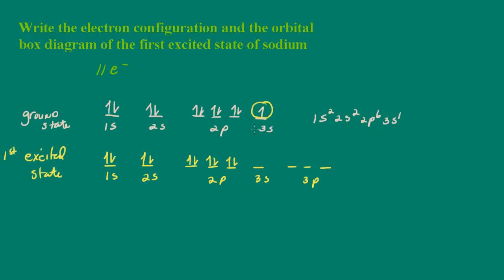So again, now, it's this 3s electron that is promoted, and that's going to be promoted to the 3p orbital. So that's the orbital box diagram.